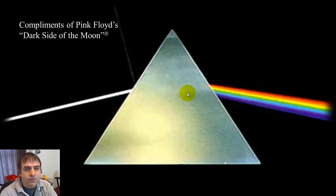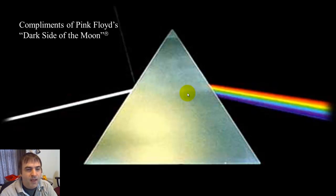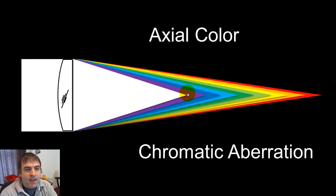When light goes through a wedged piece of glass, it disperses into different colors. This is what causes rainbows, and this is captured quite nicely in Pink Floyd's Dark Side of the Moon album cover. In a lens, blue light is going to focus shorter than the red, or closer to the lens than the red. This is called axial color or chromatic aberration.